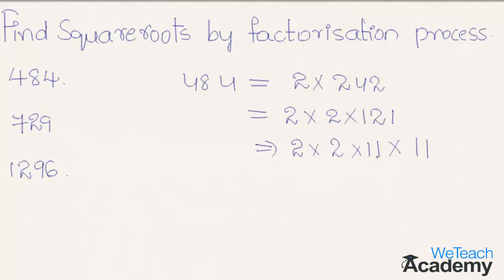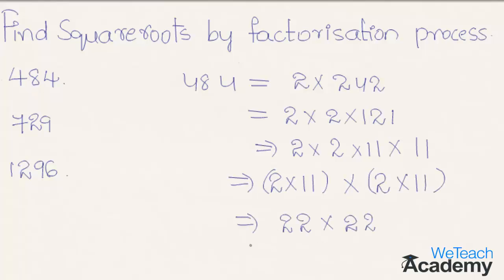Now let us group these factors and make them equal pairs. We get 2 × 11 into 2 × 11, that is 22 × 22, which is equal to 22 squared. So the square root of 484 is 22.